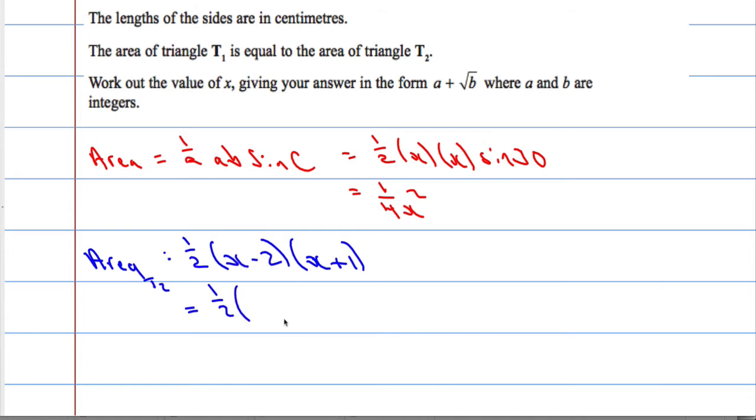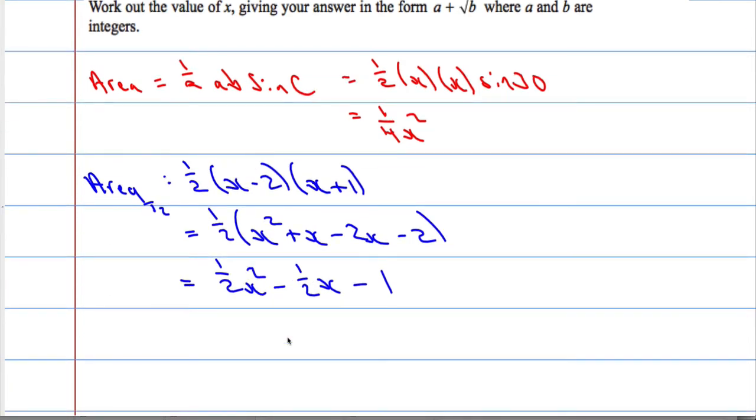Which equals a half times x plus 1 times x minus 2, which equals a half times x squared minus x minus 1. And these two areas are equal to each other. So a quarter x squared equals a half x squared minus x minus 1.